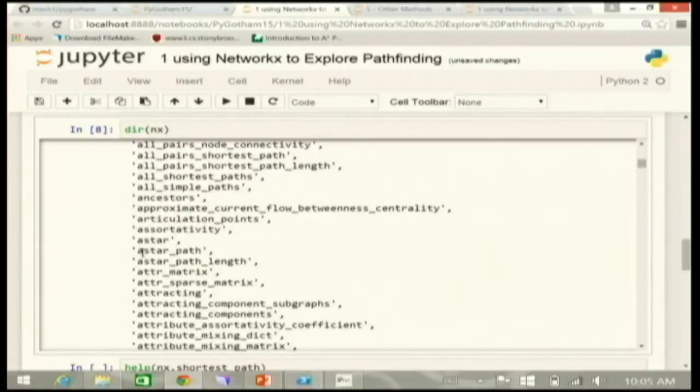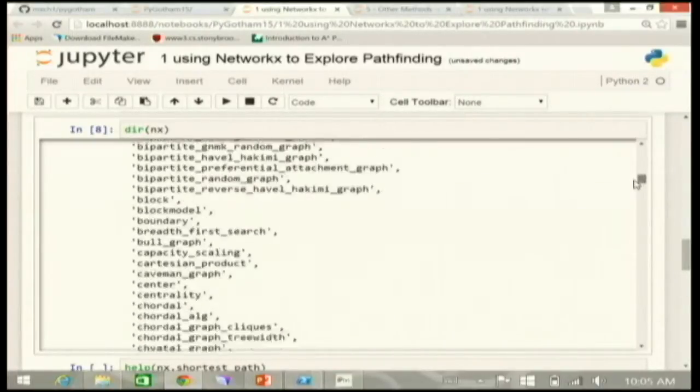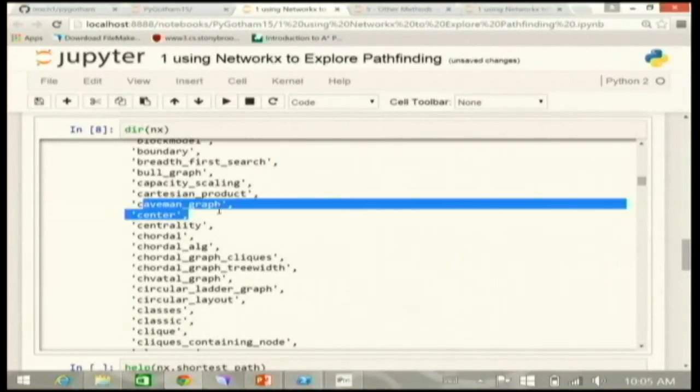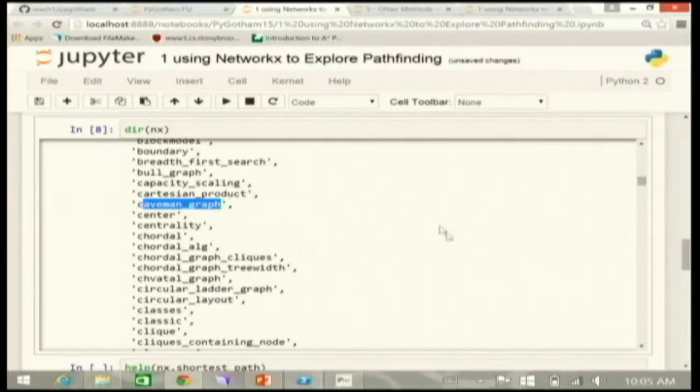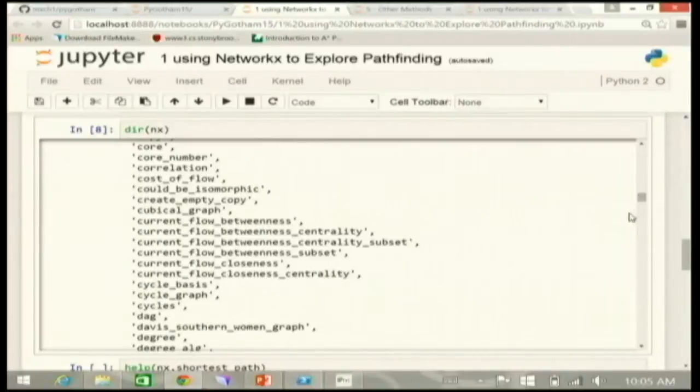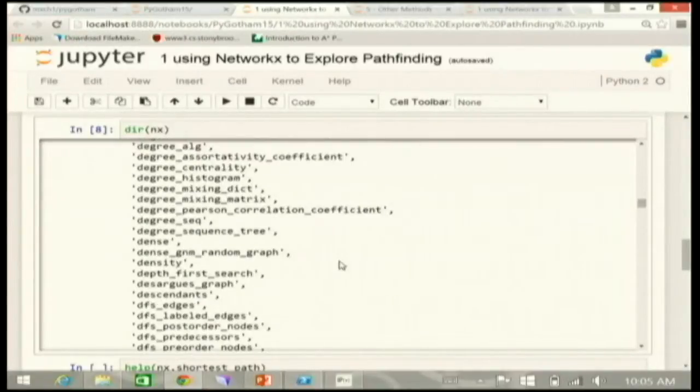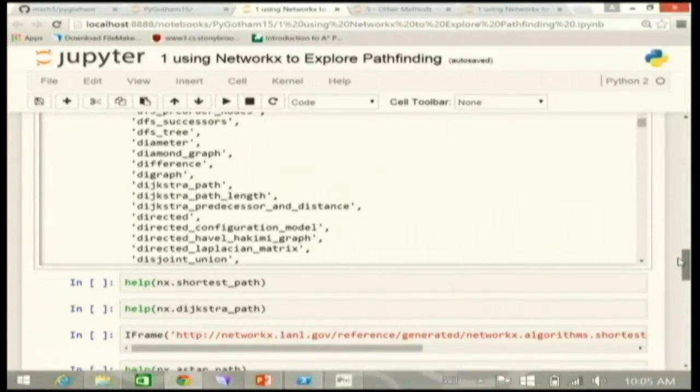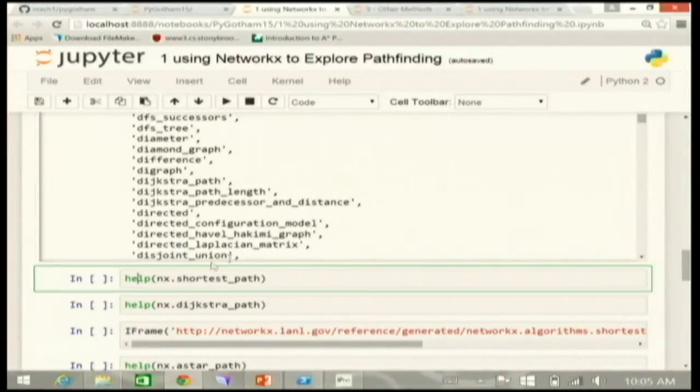So anything that you're playing with or reading about, chances are they've written something to do some aspect of it. So the one we're going to be looking at a lot today is A star, A star path, and then also Dijkstra, which will come up here in the bottom. One thing that I always enjoy is there's also a caveman graph. The other one we're going to come by down here is we're going to see Dijkstra in a little bit. And we can see a path, path length, and so on.